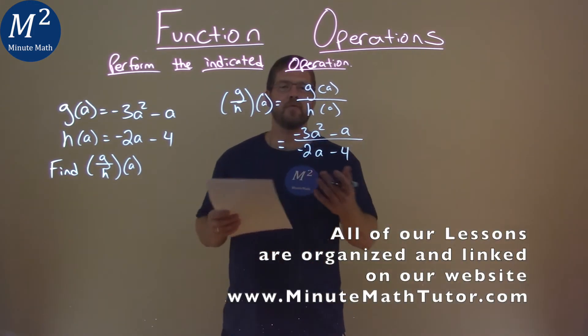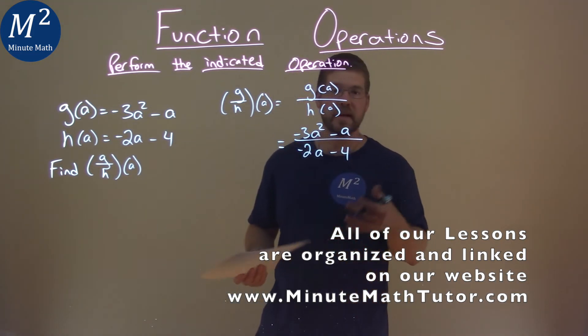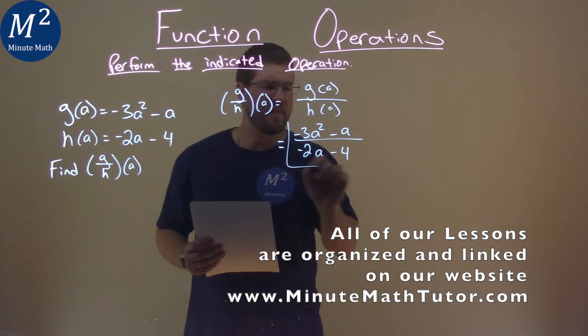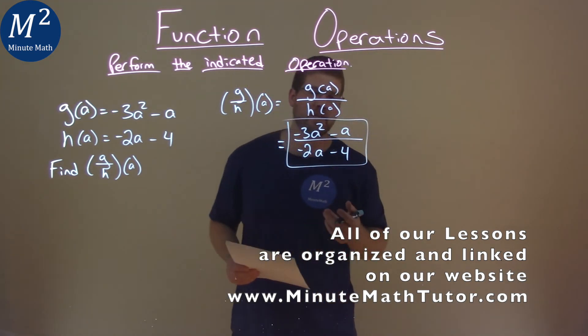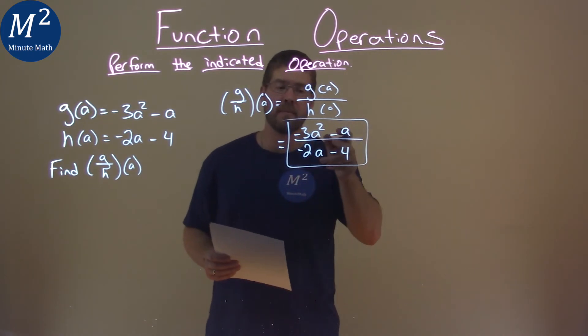And at this point we try to see if we can simplify it. But here's the trick, or the kicker, it can't. We have it pretty much in simplest form here, and so our final answer is just negative 3a squared minus a over negative 2a minus 4.